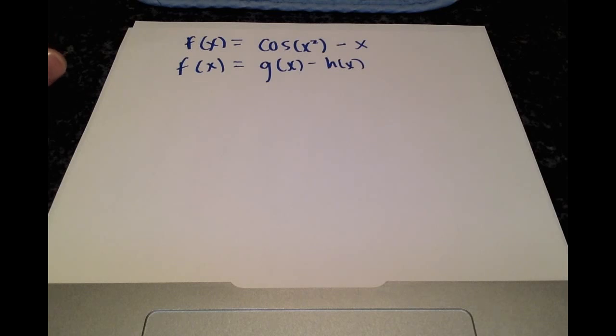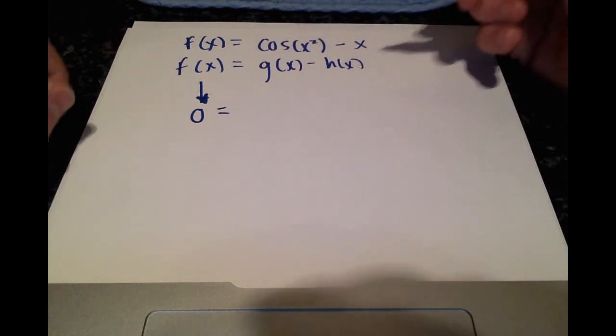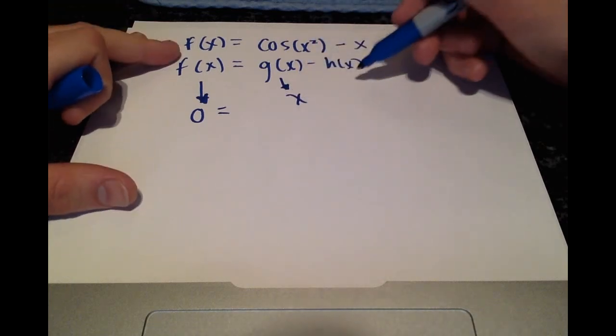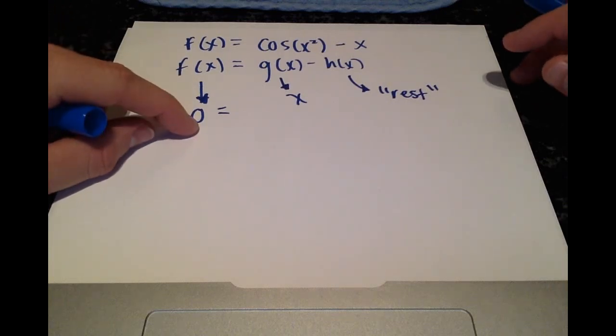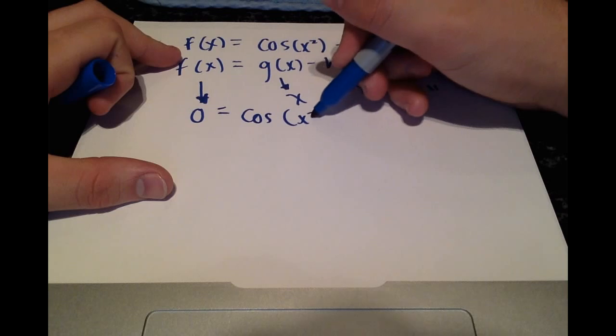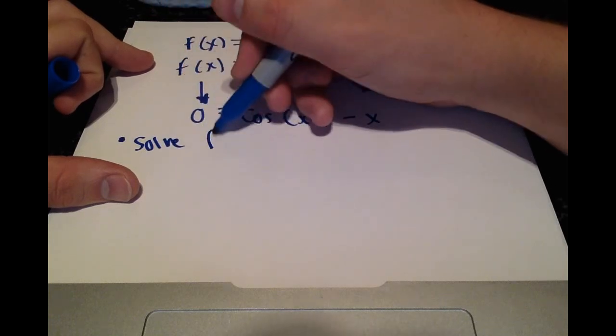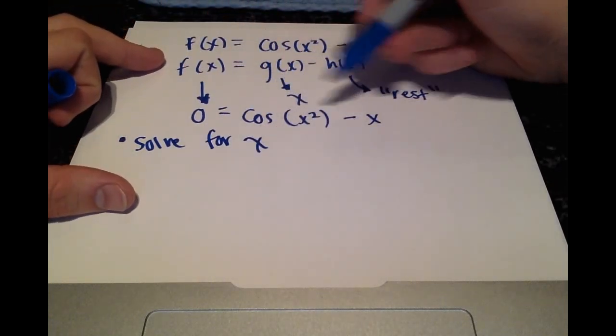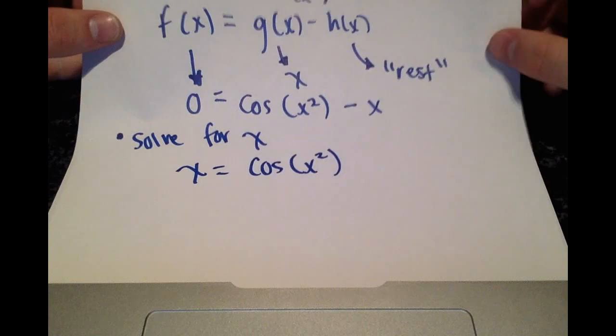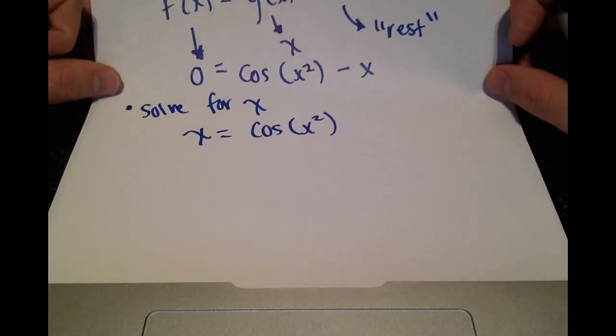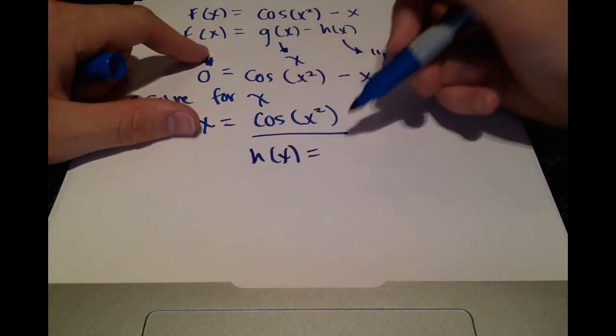Alright, and then we're going to set f of x equal to 0. And g of x equals x and h of x will be whatever is left over, so the rest of the function. So we get 0 equals cosine of x squared minus x. And then the next step here is to solve for x. Alright, so add x to both sides and you get x equals cosine of x squared.